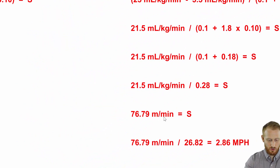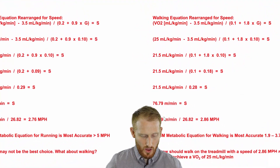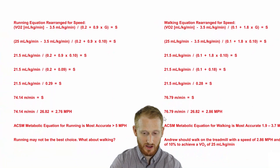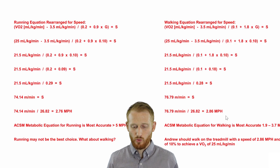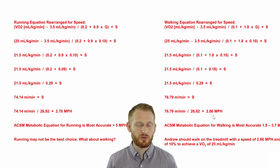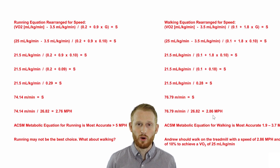To show the results side by side: the running equation gave 2.76 miles per hour, and the walking equation gave 2.86 miles per hour. They're similar but not the same, so you really do need to do them separately — don't substitute one equation for the other. A little more complicated than some other calculations, but still very doable. If you have any questions or comments, put them in the comment section below and I'll try to get back to you. Thanks.